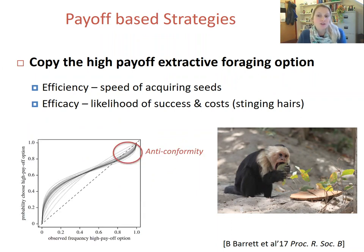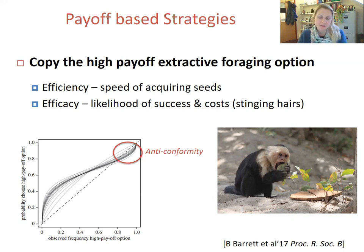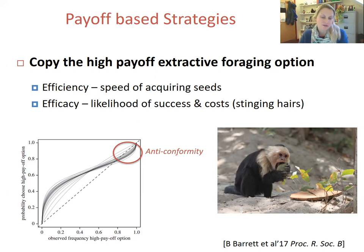This figure shows the relationship for individuals between how often they observe the high payoff behaviour being demonstrated in the population and the probability that they themselves use this high payoff behaviour. You can see that all individuals showed a preference for the highest payoff option. Comparing the curve to the dashed unbiased social learning line highlights their tendency to perform the high payoff behaviour at a higher rate than they had observed it, much like the S-shaped conformity curve I talked about in the previous lecture segment.